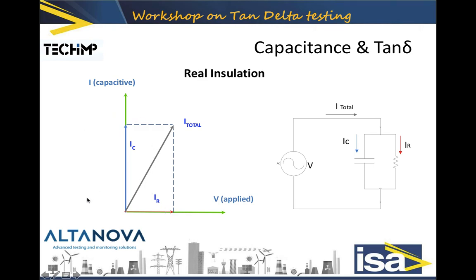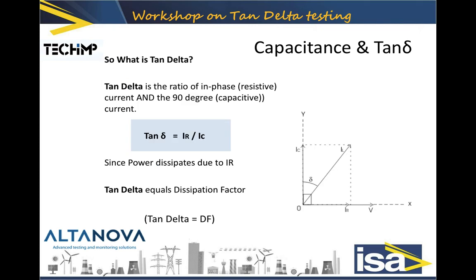We now define tan delta. The angle delta that we look at is a very small angle — usually less than 1 degree. The tangent of this angle, tan delta, equals IR over IC. Another name for tan delta is dissipation factor; they are synonyms. So tan delta equals the ratio of the in-phase resistive current to the 90-degree capacitive current.